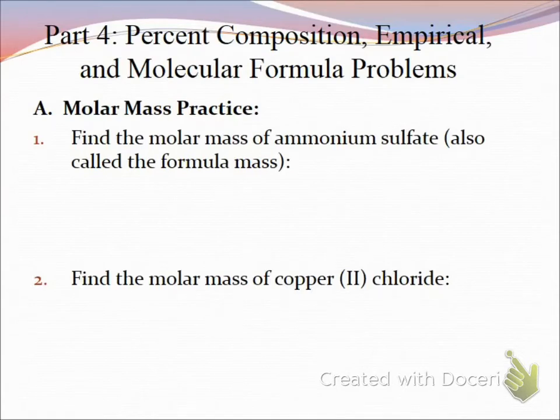So if I want to find the percentage of anything, let's say the percentage of girls in this room, what would I do? Part over whole, times 100. So I'd take the number of girls divided by the total number of students, multiply by 100. If I want to do that for compounds, I'm still going to do part over whole and multiply by 100. Only my whole now is going to be my molar mass.